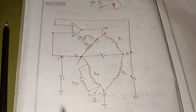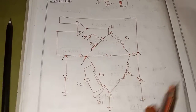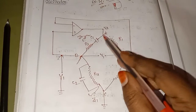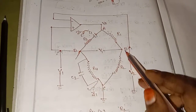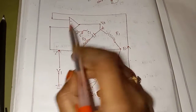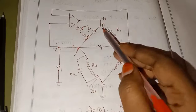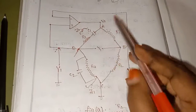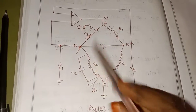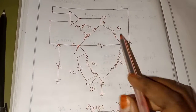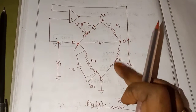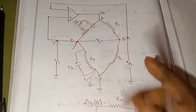Friends, this is the sine wave circuit diagram. In this circuit diagram, we have the Wien Bridge and the op-amp. The Wien Bridge contains two capacitors and four resistors connected within the bridge.